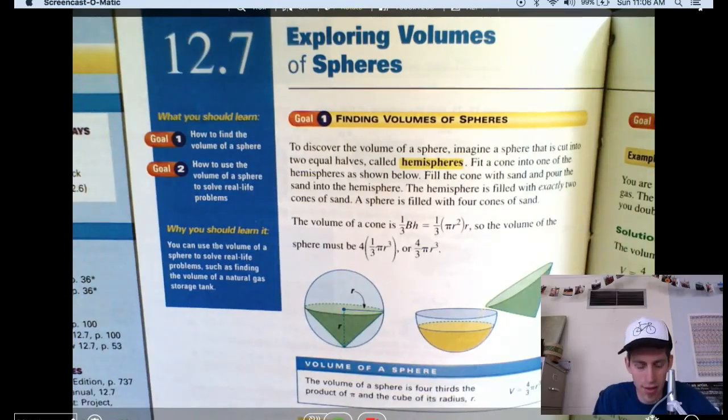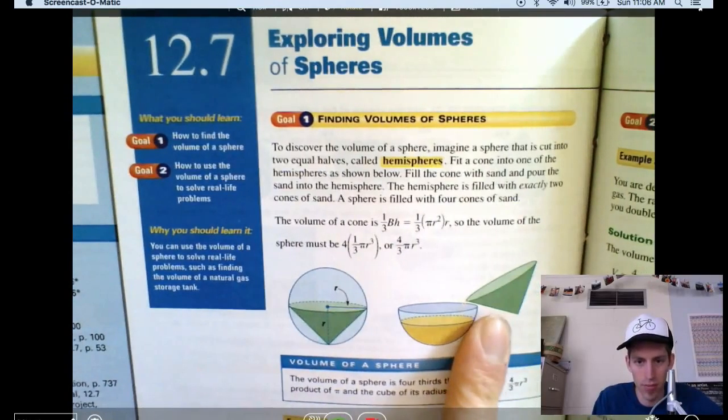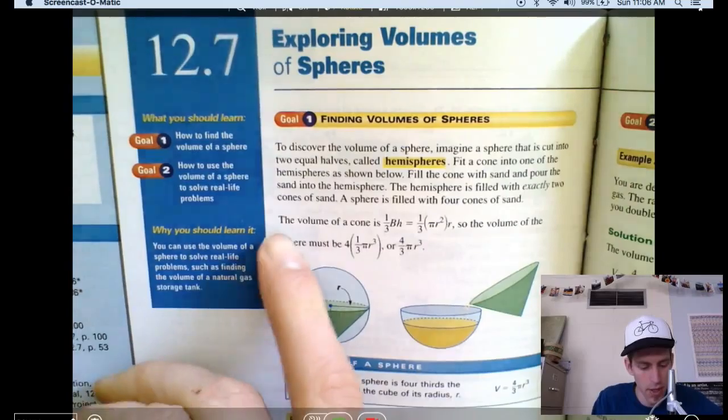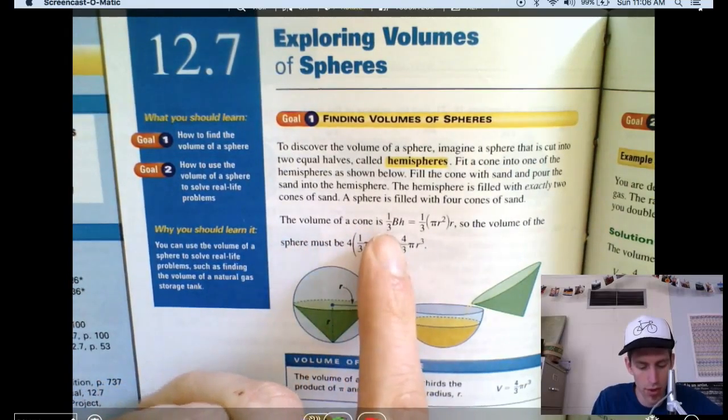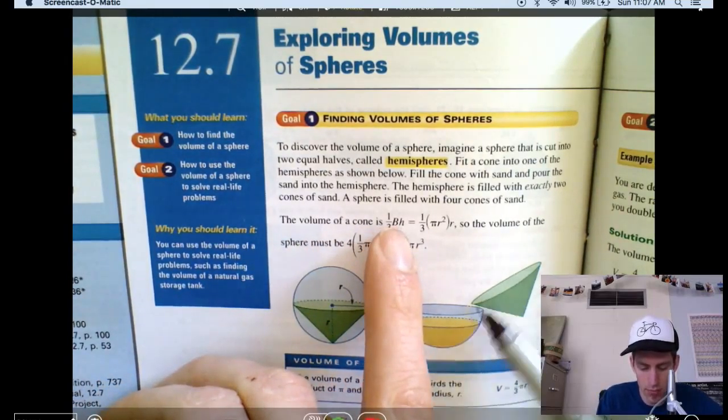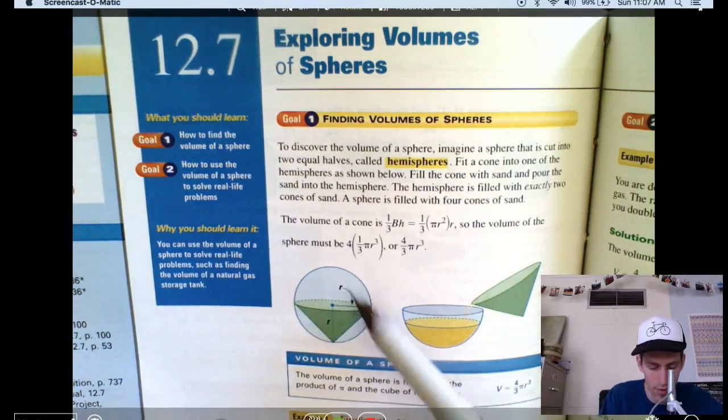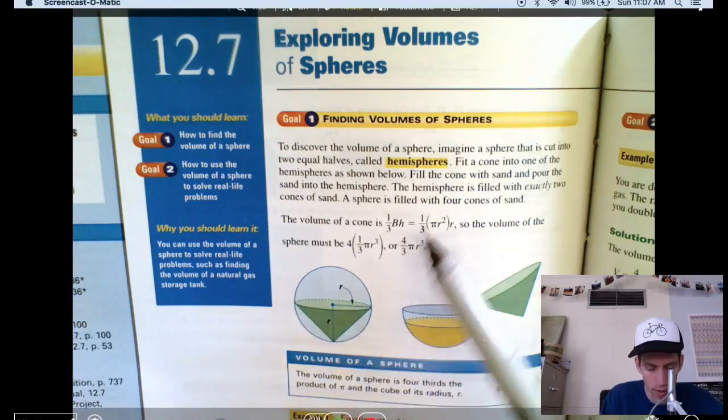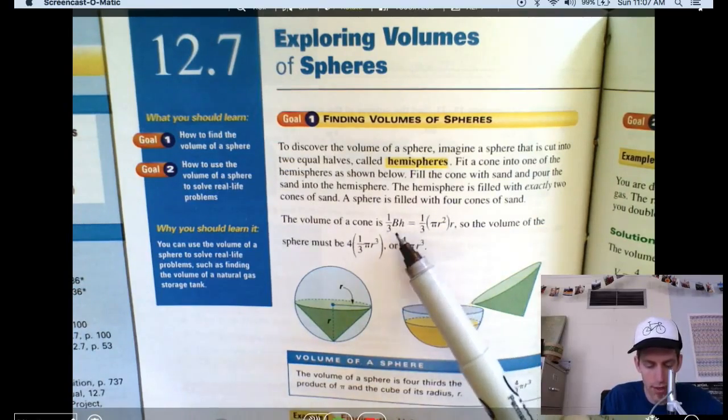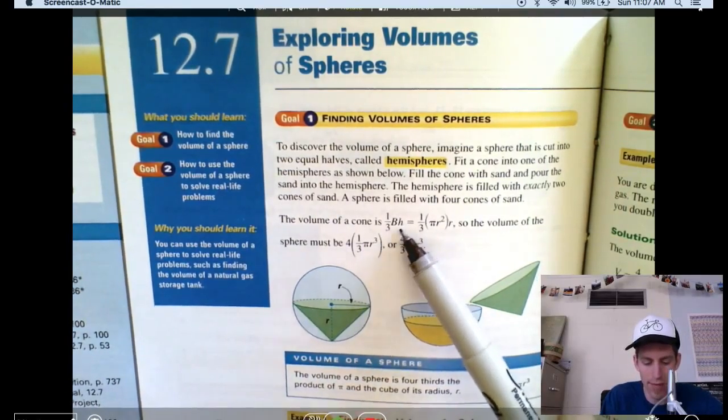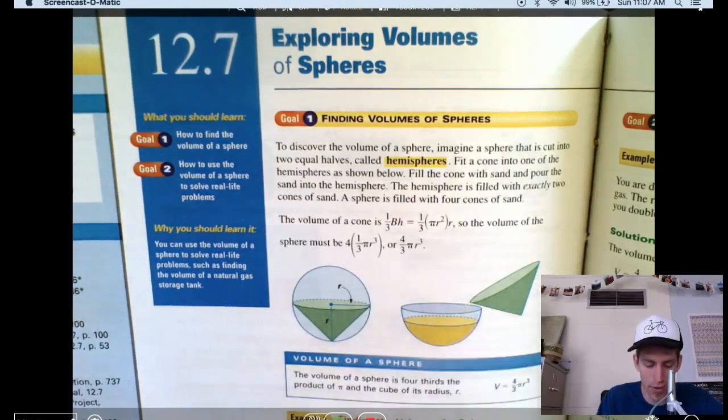So basically, they figured out the volume of a cone, which is on another video. The volume of a cone is one-third the base, the circle, times the height, which in this case would be the radius of this sphere, one-third base times the height. And so all you've got to do is multiply that by four to get the volume of a sphere.